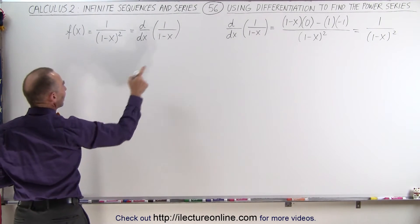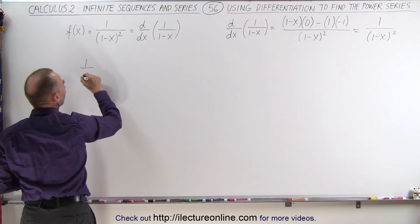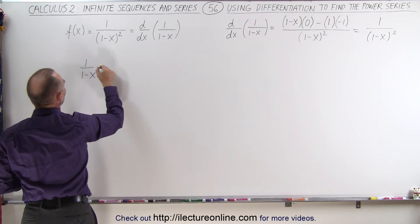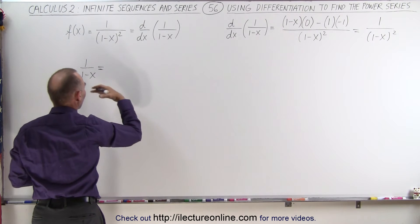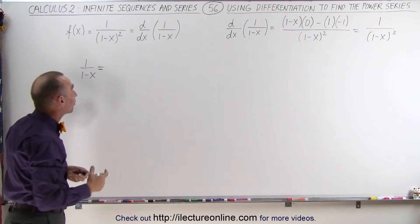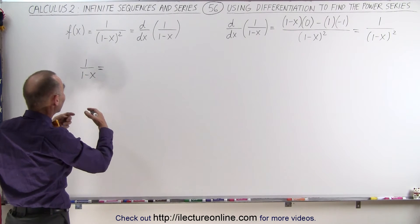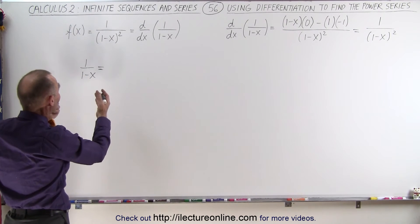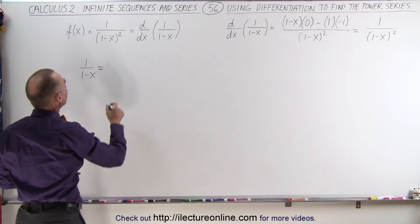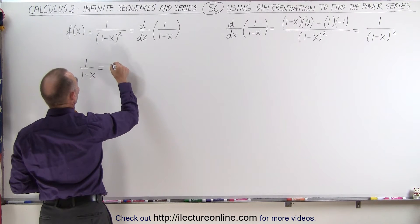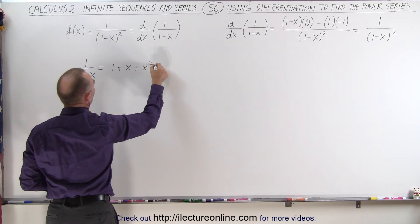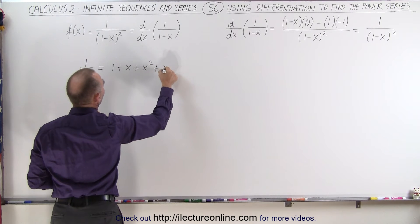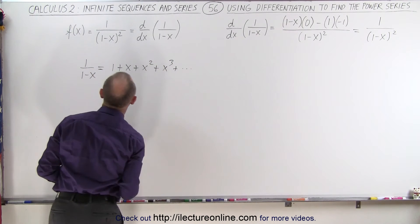We're going to say that 1 over 1 minus x is equal to — and of course we already know that because that's the starting point of many power series. In this case, a geometric series where the constant equals 1, it is equal to 1 plus x plus x squared plus x cubed plus so forth.